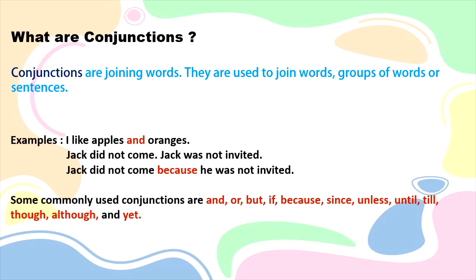Jack did not come. Jack was not invited. These two sentences can be joined: Jack did not come because he was not invited. So in this example, instead of writing Jack two times, you write 'Jack did not come because he was not invited.' You remove the second Jack and join the two sentences with the word 'because.'